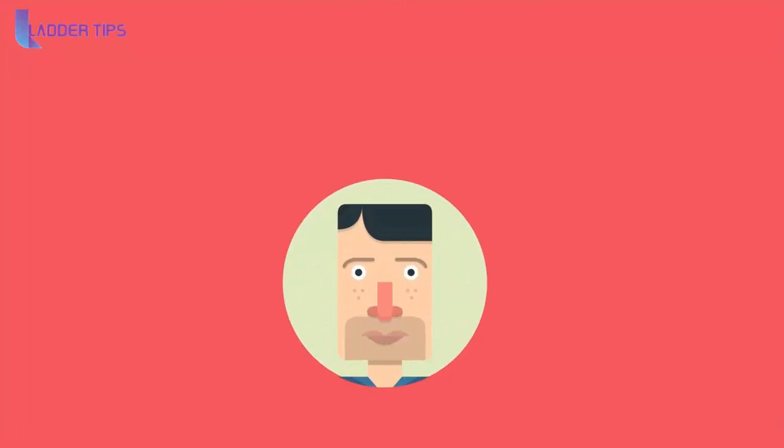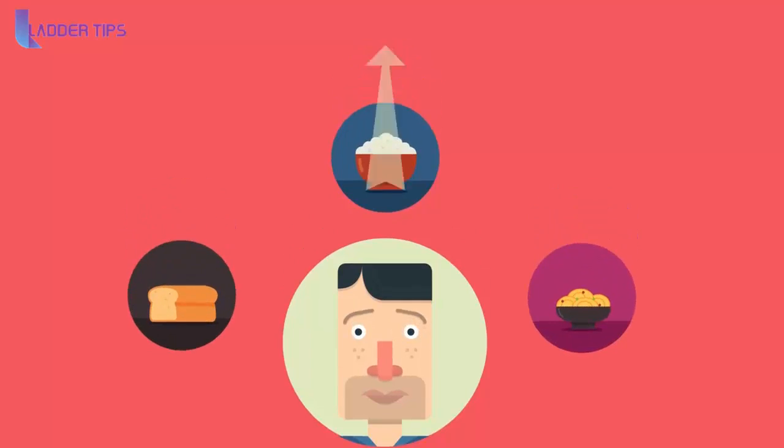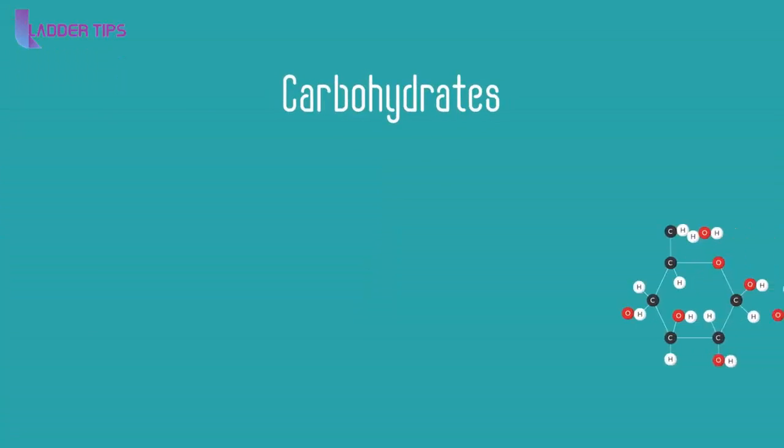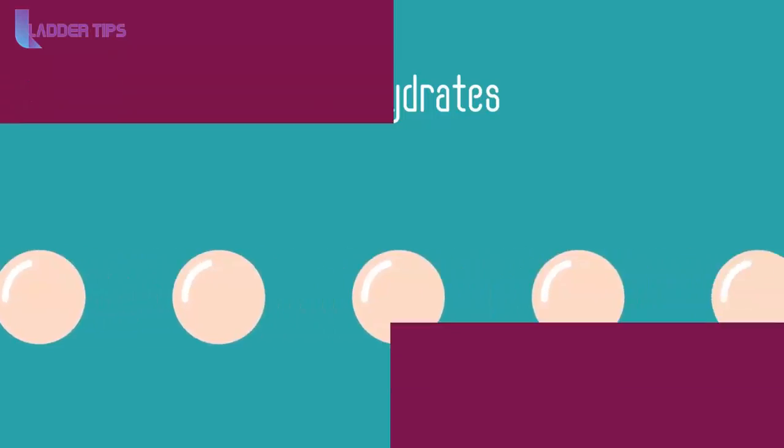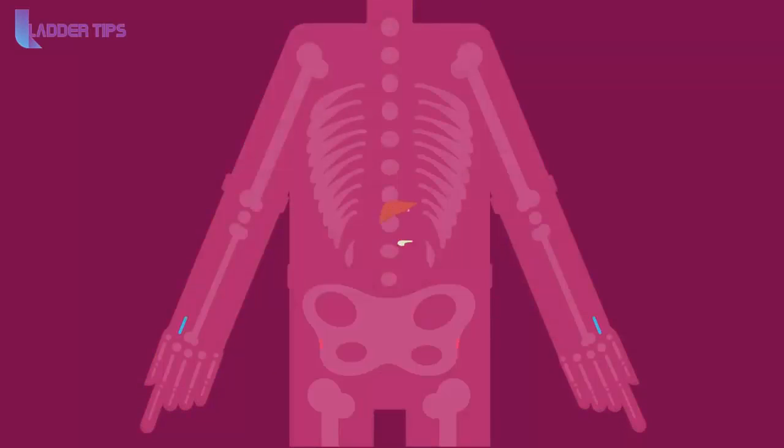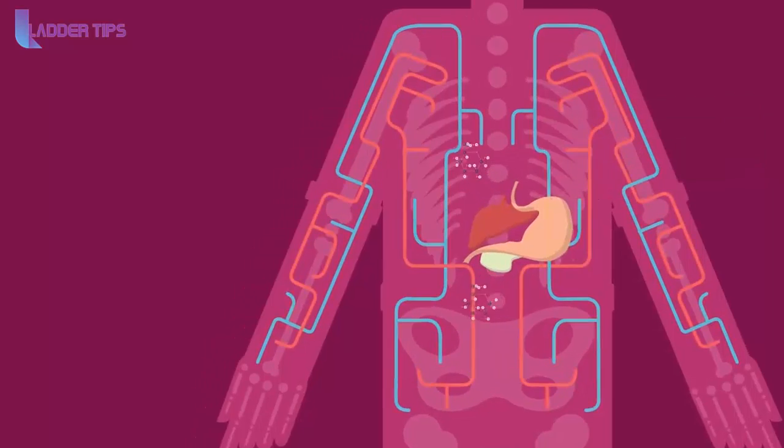When you consume a meal that is high in carbohydrates such as rice, pasta and bread, this will cause your blood glucose level to increase. Carbohydrates are essentially long chains of repeating glucose monomer units, much like beads on a necklace. During digestion this is broken apart into glucose which is absorbed into our bloodstream.